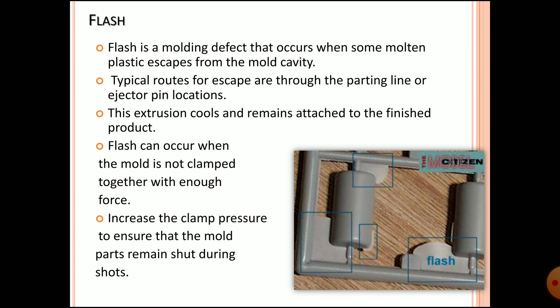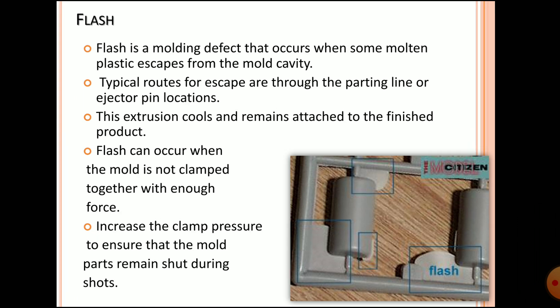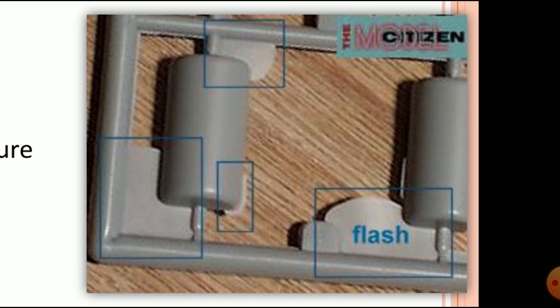Flash is a molding defect that occurs when some molten plastic escapes from the mold cavity. The typical routes of escape are through the parting line or ejection pin locator. This extruded plastic cools and remains attached to the finished part. Flash can occur when the mold is not clamped together with enough force. Prevention: increase the clamp pressure to ensure the mold parts remain shut during the shot, as you can see in the image.